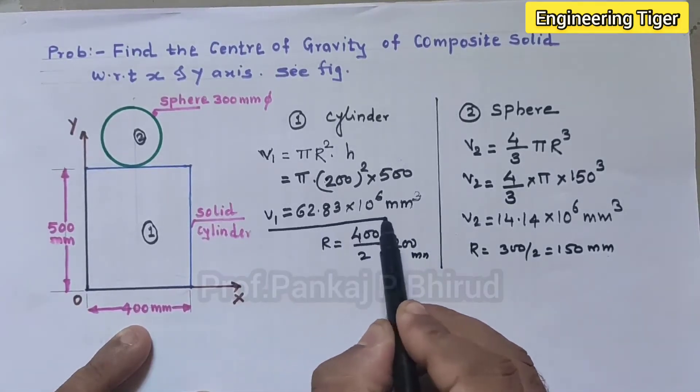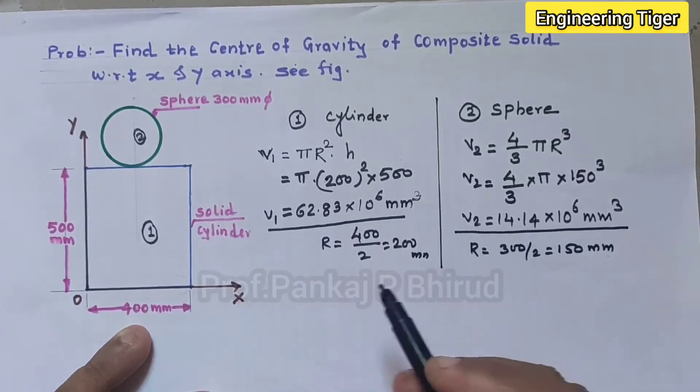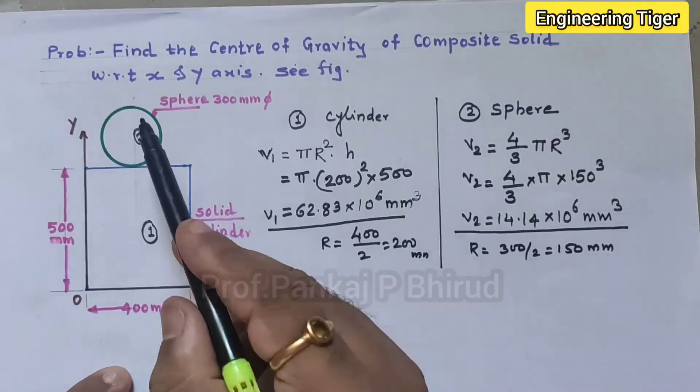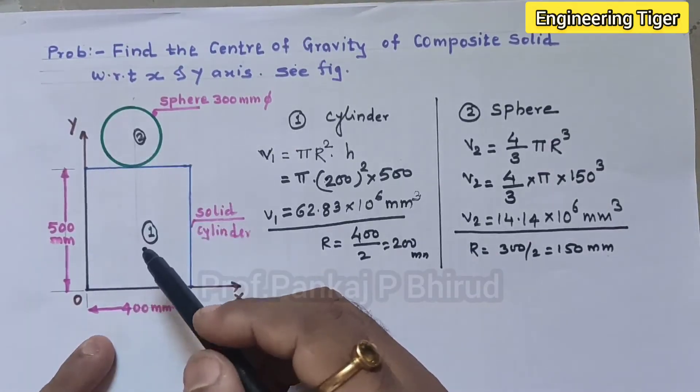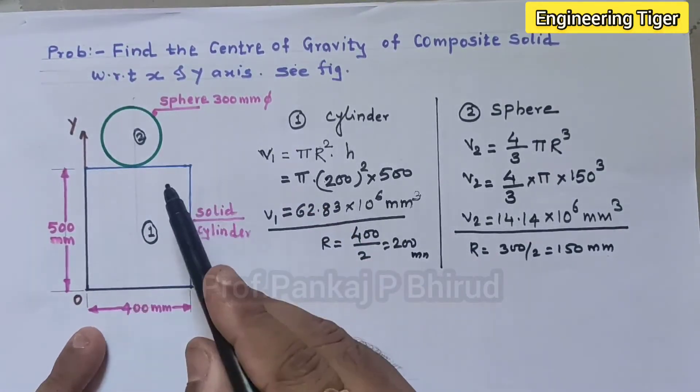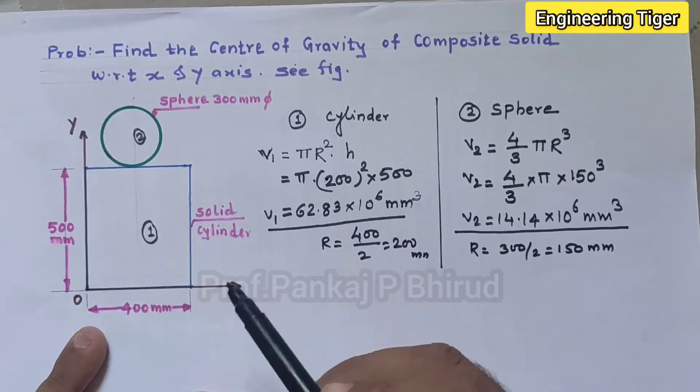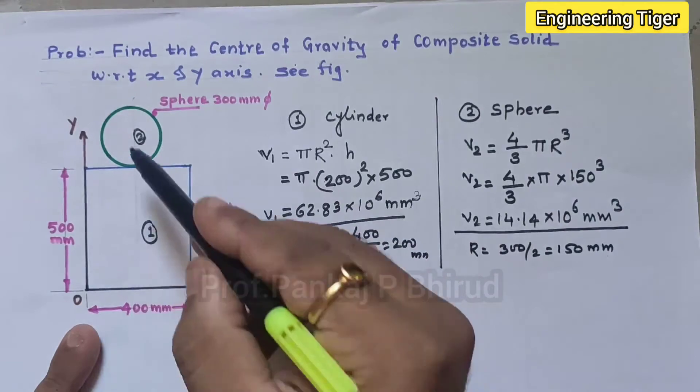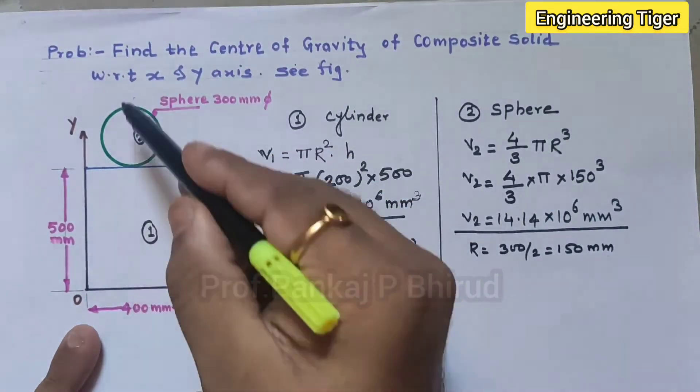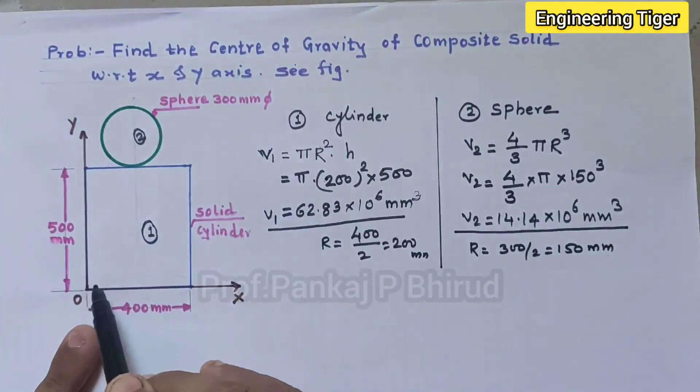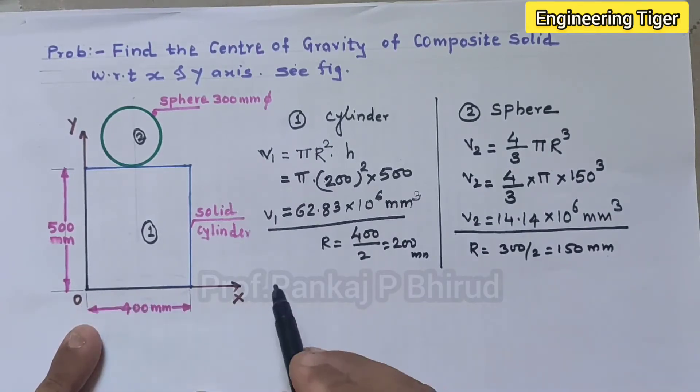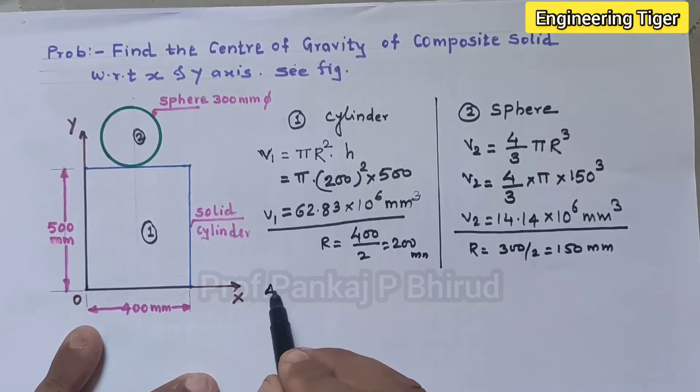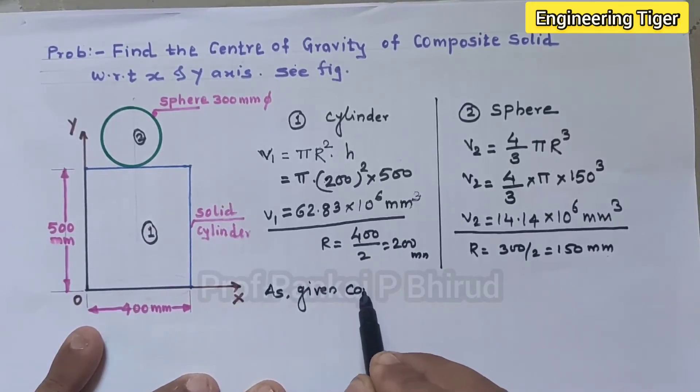So we required V1 and V2 for next calculations. Now here observe the figure. If it is symmetrical to any axis then we can calculate the distance from the axis. So here this figure is symmetrical to vertical axis. We'll get the horizontal distance from the y axis and that is 400 divided by 2.